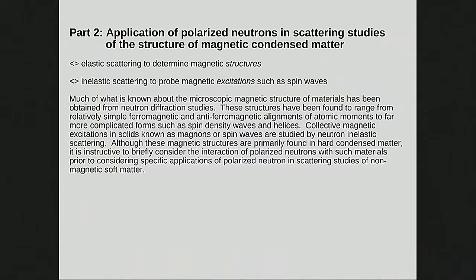With a polarizing device and a polarization rotator — a rectangular region of space with an orthogonal magnetic field — you can rotate the polarized beam to any direction you want. Polarized neutrons in hard condensed matter are used for elastic scattering to study how magnetic atomic moments point in materials, and inelastic scattering to measure spin-wave excitations, magnons, and so on within solids.